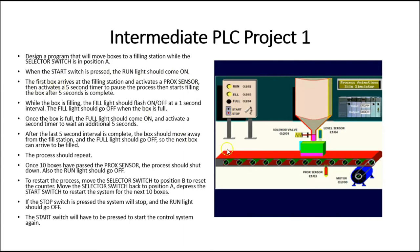The first box arrives at the filling station and activates a proc sensor. This activates a five-second timer within the program before the solenoid valve is operated to fill the box. We have a solenoid valve that allows product into the box, and a level sensor that detects when the box is filling. While filling, the fill light should flash on and off at one-second intervals.